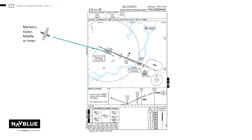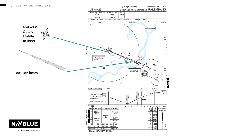Markers showing the outer, middle and inner, if the state published them. The localiser beam — this is showing a front beam localiser. In this example, it is showing a back beam localiser procedure with a solid black part to the left in the approach direction. The back beam outbound bearing is either below the localiser or behind it as shown here. A warning note will be inserted for the back beam localiser.